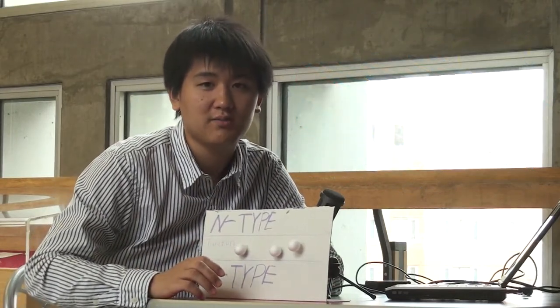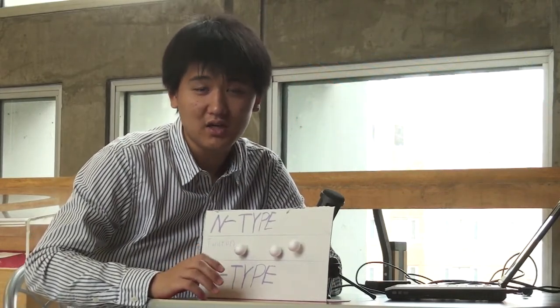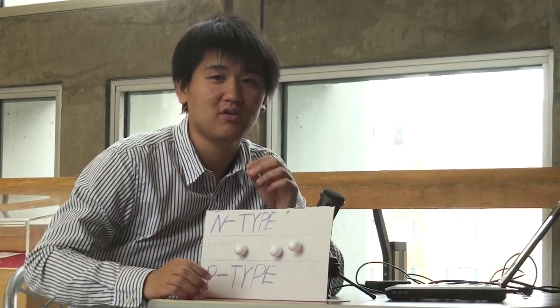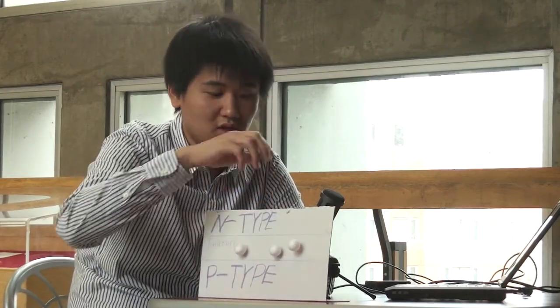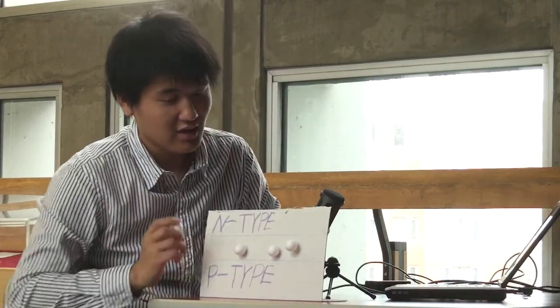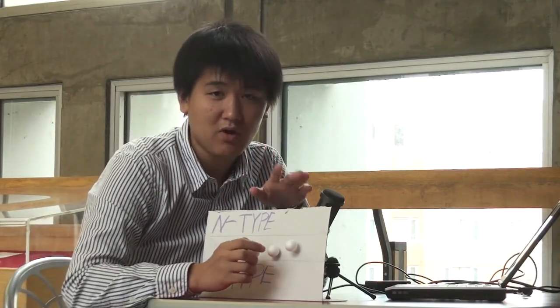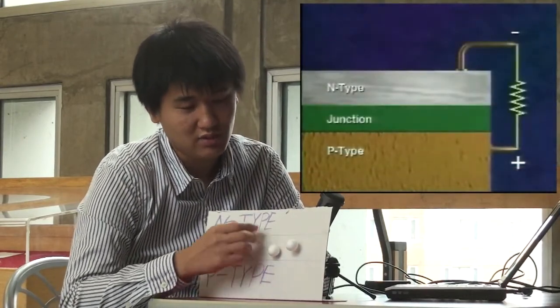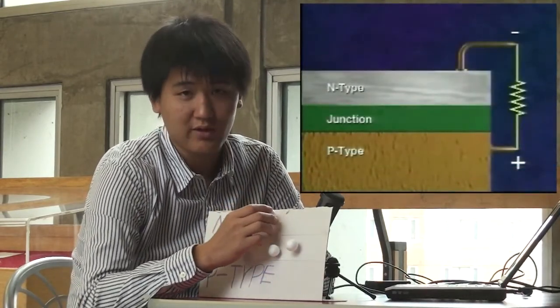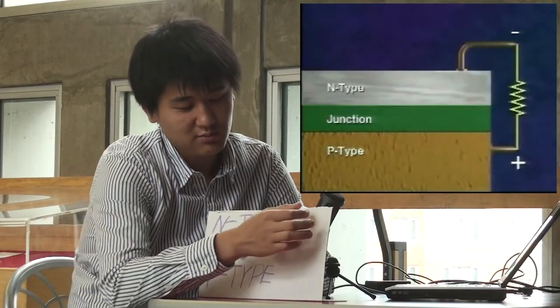Semiconductor is the material in between conductor and non-conductor. Initially, electrons don't move. When sunlight strikes on the solar panels, the electrons get energy and they are free to move. Due to the special property of semiconductor, electrons tend to move to N-type area.